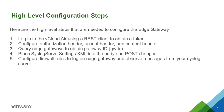We will first need to log into vCloud Air using a REST client to obtain a token. Then we'll need to configure the headers in the REST client. Next, we'll have to query vCloud Air to obtain the Edge gateway ID, then input the syslog server IP address and configure vCloud Air to log firewall rule messages to our syslog server.